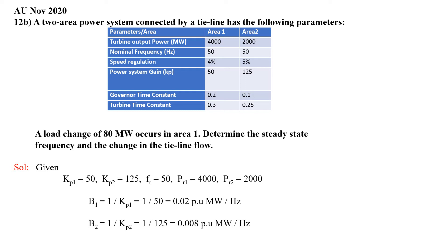Given data: KP1, KP2, FR, PR1, PR2 are given. First, I am going to find out B1 and B2 values, because I need the area frequency response characteristic beta, which is B plus 1/R. B1 = 1/KP1 = 1/50 = 0.02 per unit MW per Hz. Similarly, B2 = 1/KP2 = 1/125 = 0.008 per unit MW per Hz.